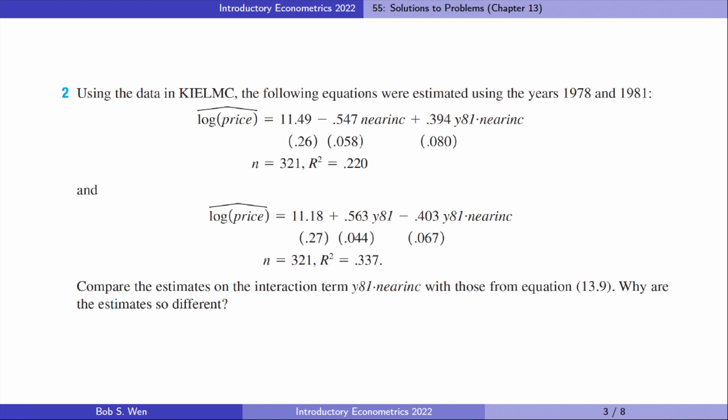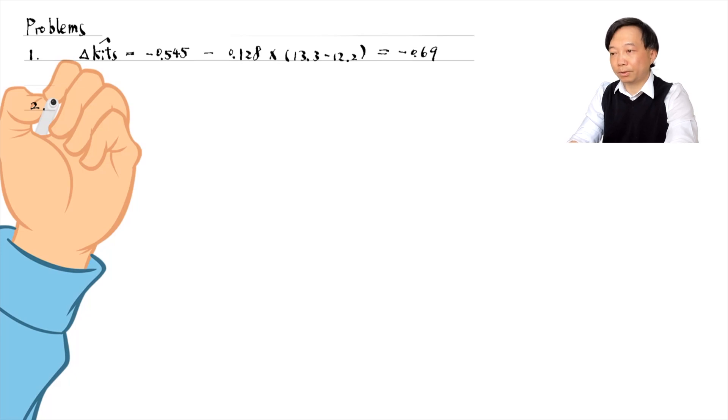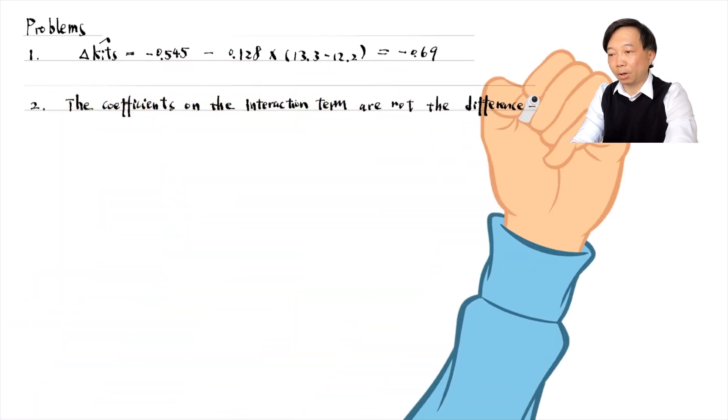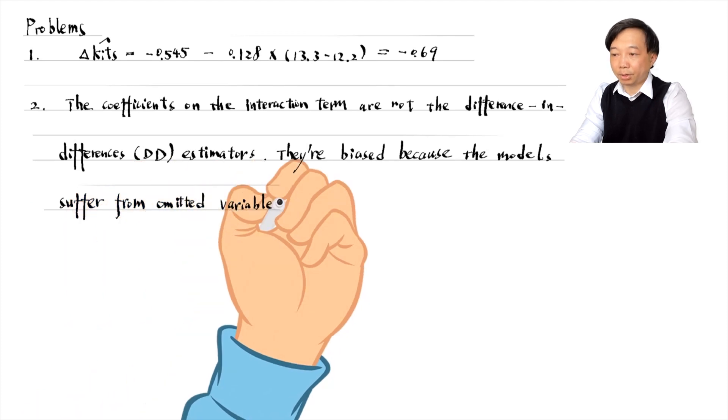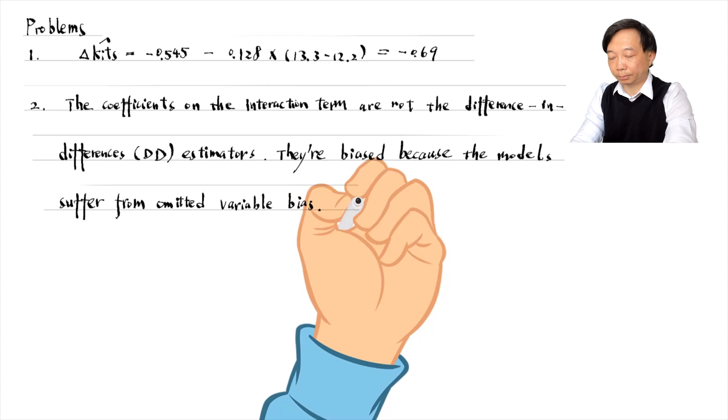Let's do problem 2. The following equations were estimated using the years 1978 and 1981. Compare the estimates on the interaction term with those from equation 13.9. Why are the estimates so different? The coefficient on the interaction term is the difference in differences estimator in equation 13.9 in the textbook. Here the coefficients on the interaction terms are not the difference in differences estimators. The first equation does not have the year dummy variable, and the second does not have the incinerator location dummy variable. Both regressions suffer from omitted variable bias. As a result, the estimates for the interaction term are biased.